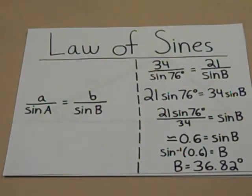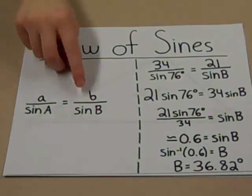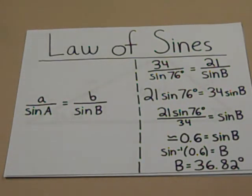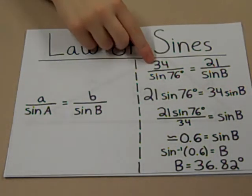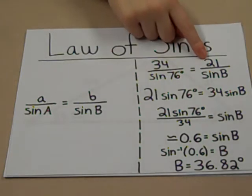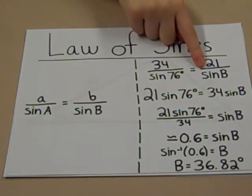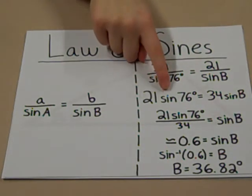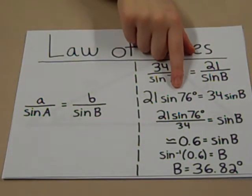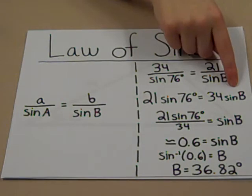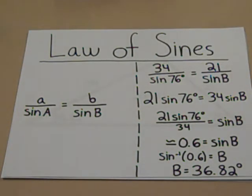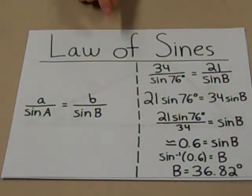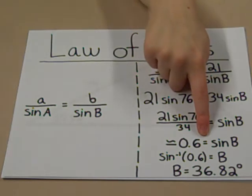Now we can use the law of sines. A over sine of A equals B over sine of B. Plugging in the numbers that we know, 34 over sine of 76 degrees equals 21 over sine of B. We can use cross multiplication to get rid of the fractions. 21 times sine of 76 degrees equals 34 times sine of angle B. At this point, we can solve for B by dividing both sides by 34. This gives us about 0.6 for sine B.